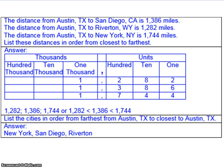We can also use a place value chart to find which number is least, middle, and greatest. Here we're looking at distances cities are from Austin, Texas, placing three numbers on the chart to see the value of each digit. When finding least to greatest, start with the far-left digit and work right. In our example, all three numbers have a 1 in the far-left place, so we move to the hundreds place. The values are 2, 3, and 7 — so 1,282 is shortest (Riverton), 1,386 is next (San Diego), and 1,744 is the longest distance (New York).